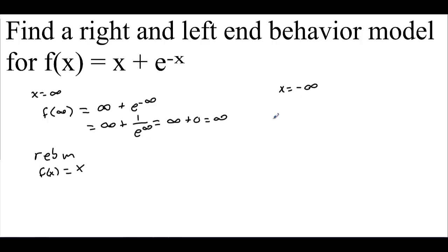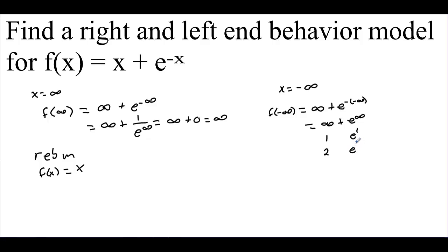What about when x equals negative infinity? We have f of negative infinity equal to negative infinity plus e to the negative negative infinity, which is negative infinity plus e to the infinity. Consider: at x equals 1, e to the 1 is about 2.718; at x equals 2, it's about 9; at x equals 3, e to the third is 27. The exponential is winning the race to infinity. So the left end behavior model is f of x equals e to the negative x — this function behaves like e to the negative x going to the left.